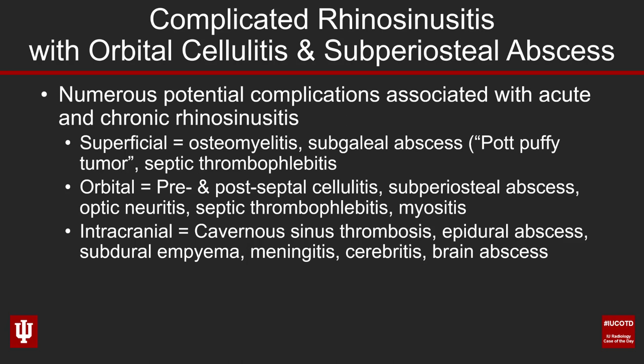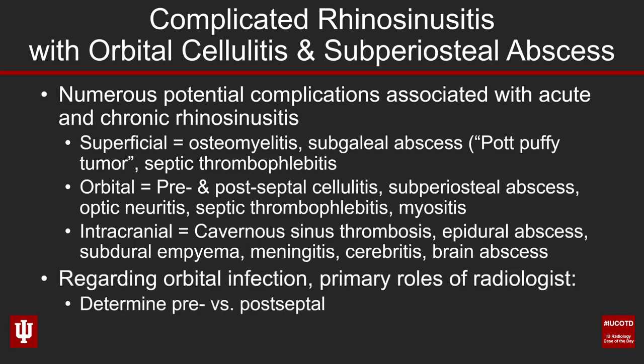When approaching orbital infection, the primary roles as a radiologist are: first, determine whether the infection is preseptal or postseptal. Preseptal cellulitis is treated with oral antibiotics and the patient is likely managed at home. But if it creeps postseptal, that really ups the ante — the risk of complication is higher and the patient will likely receive much more aggressive treatment.